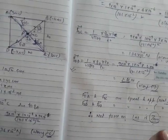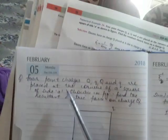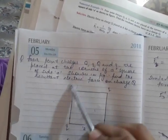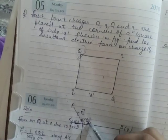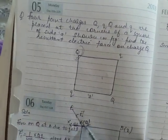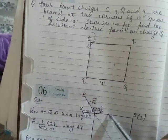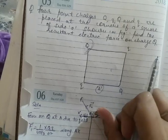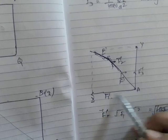Now another question based on the same concept. Four point charges Q, Q, Q, and Q are placed at the corners A, B, C, D of a square. Find the resultant force on the charge Q at corner A. First, find the force on Q at A due to Q at B. Call this F1 = (1/4πε₀) × Q × Q / a², where a is the side of the square. They are similar charges so they repel — F1 acts along AX direction away from B.